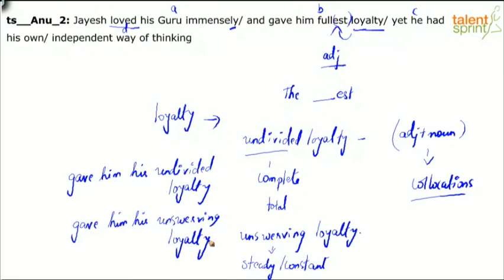Anyways the phrase has to be complete. So I can either say gave him his undivided loyalty or I can say gave him his unswerving loyalty. These are the right collocations to go with loyalty. Fullest sounds weird or funny, it just doesn't sit right for me at least. Even if I have to keep fullest, I still have to include his. Gave him his fullest loyalty. But I would rather say if this question came in sentence improvement and if there are options for the adjective, I will definitely not use fullest. I will either use undivided loyalty or unswerving loyalty which is the more appropriate collocation. So we understand that part B has an error.